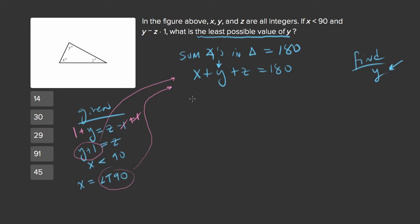So let's write our new equation. We have some number less than 90 plugged in for x plus y plus y plus 1 is equal to 180.